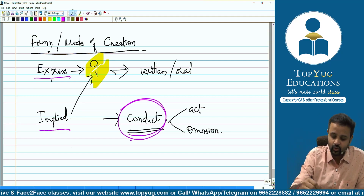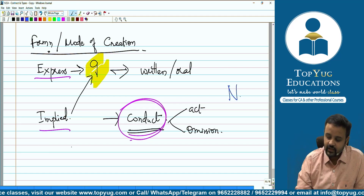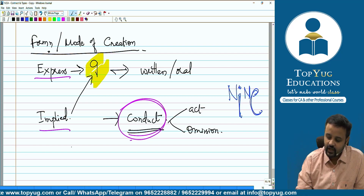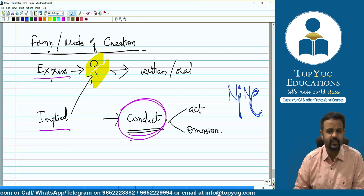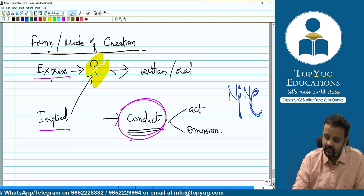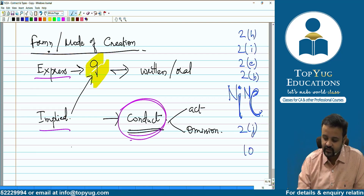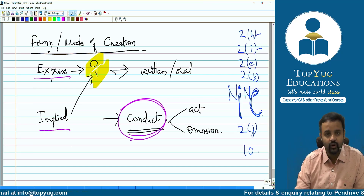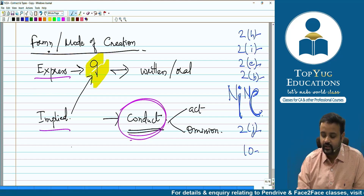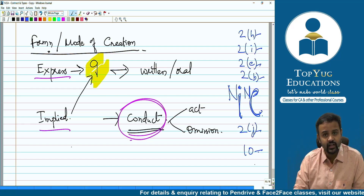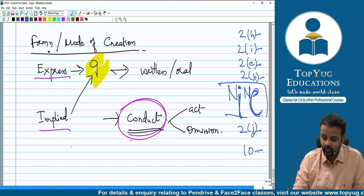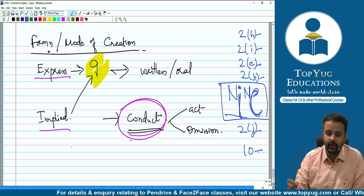A memory clue for section number 9: I for implied, E for express — IE is in the word implied-express, and section 9. We have already discussed: Section 2(h) for contract, Section 2(i) for voidable contract, Section 2(e) for agreement, Section 2(b) for promise, Section 2(j) for void contract, Section 10 for essential elements or conditions of enforceability. Now Section 9 gives us express or implied contract.